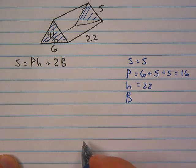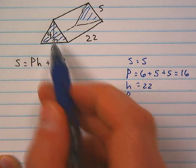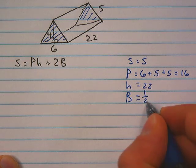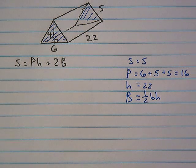And then the last variable is big B. Now that stands for area of the base. We said this is a triangular prism so we know the base is a triangle. So area of the base will be equal to one half base times height.